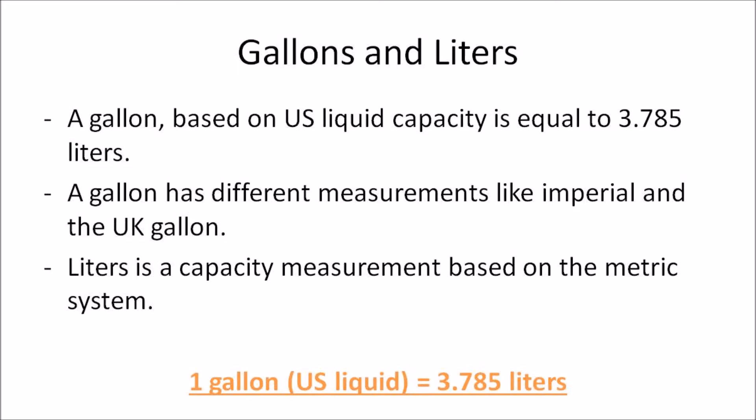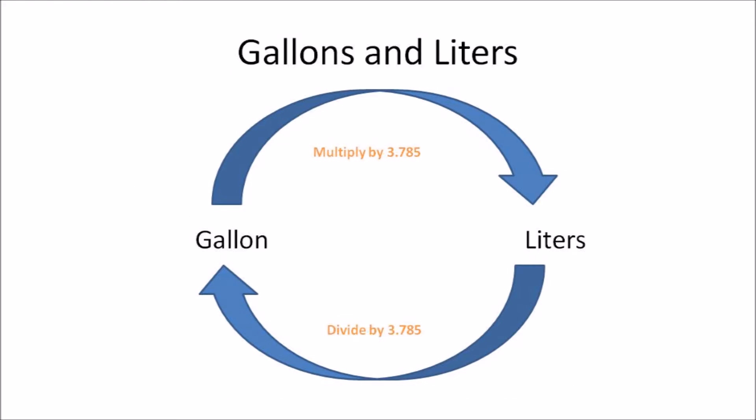It's important to remember 3.785 because this number acts as a conversion factor when you're trying to convert gallons and liters. There are other conversion factors but I like to use 3.785. As per the diagram, if you had to convert gallons to liters you need to multiply the amount you have in gallons by 3.785 to get to liters, and in order to convert liters to gallons you need to divide the amount you have in liters by 3.785.